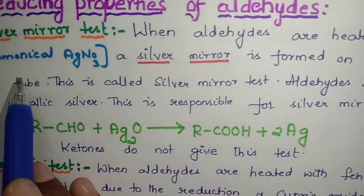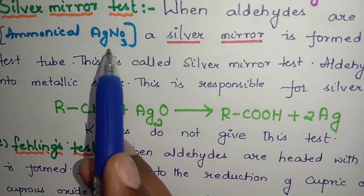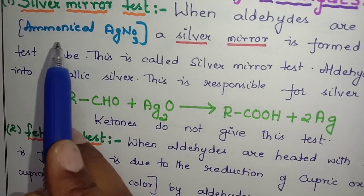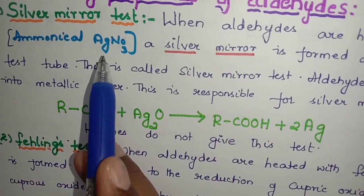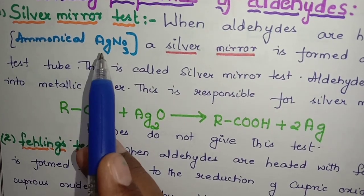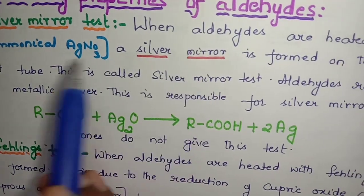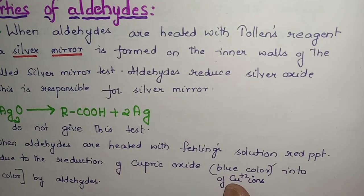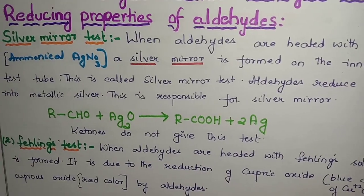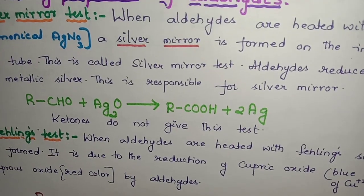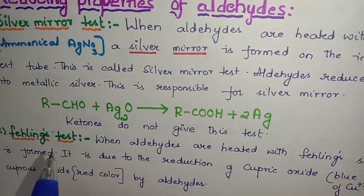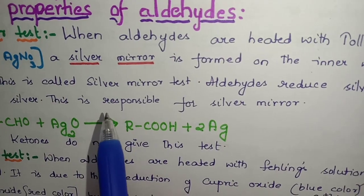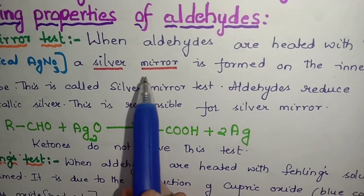Ammonical AgNO3, that means AgNO3 which is silver nitrate plus ammonium hydroxide NH4OH. Together we call it ammonical silver nitrate. When aldehydes are treated with this ammonical silver nitrate, a silver mirror is formed on the inner walls of the test tube. You can observe this silver mirror forming on the inner walls in the laboratory. What is the reason for this silver mirror?